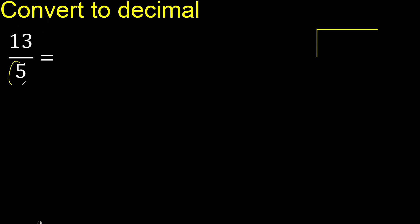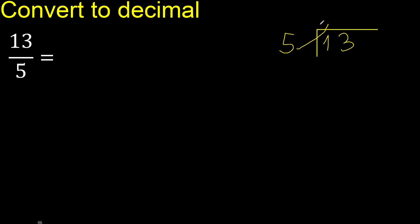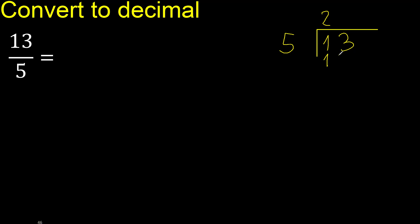13 divided by 5. 5 is not less than 13. Multiply by which number is nearest to 13 but not greater: multiply by 3 is 15, which is greater; multiply by 2 is 10.